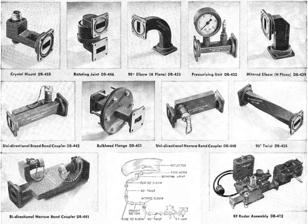Depending on the frequency, waveguides can be constructed from either conductive or dielectric materials. Generally, the lower the frequency to be passed, the larger the waveguide is. For example, the natural waveguide the Earth forms — given by the dimensions between the conductive ionosphere and the ground as well as the circumference at the median altitude of the Earth — is resonant at 7.83 Hz. This is known as Schumann resonance. On the other hand, waveguides used in extremely high frequency communications can be less than a millimeter in width.